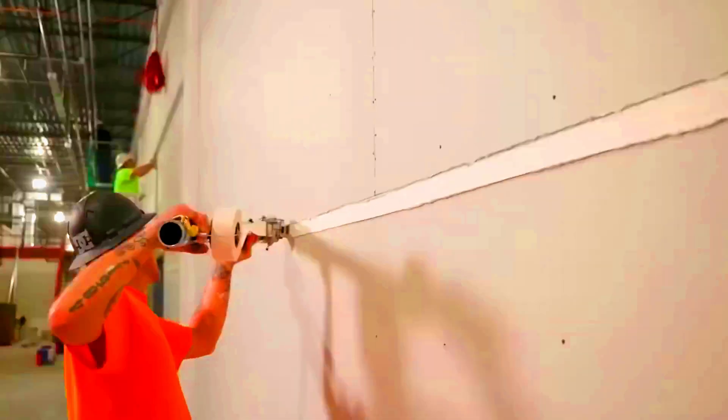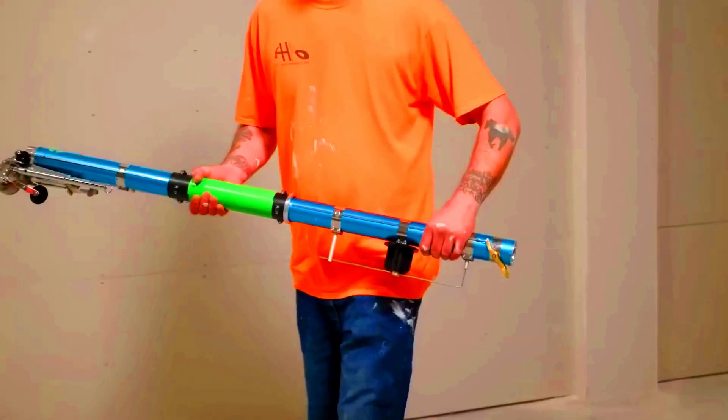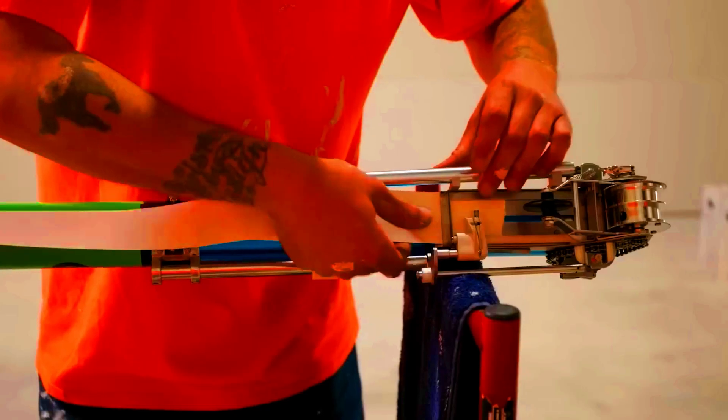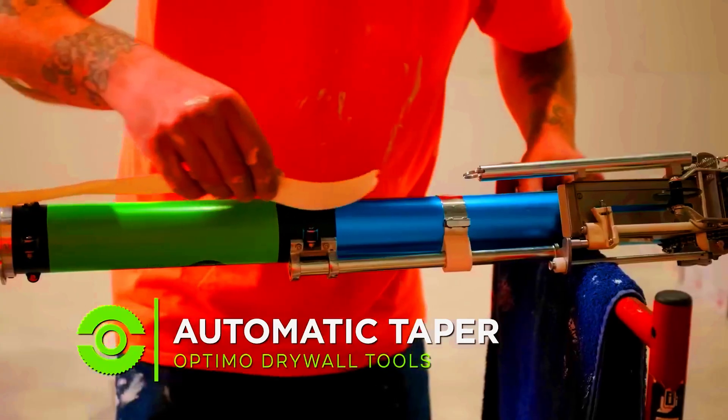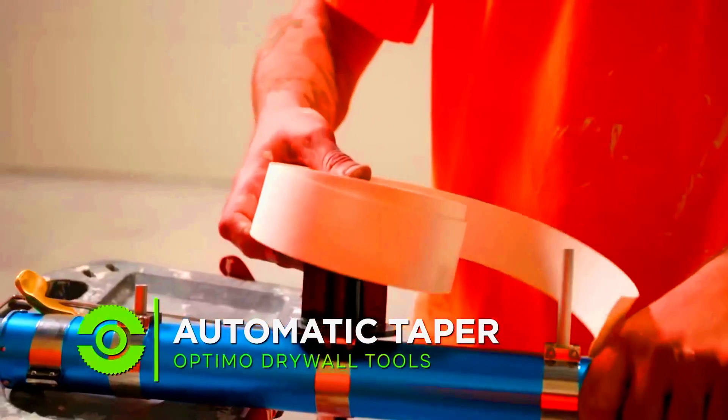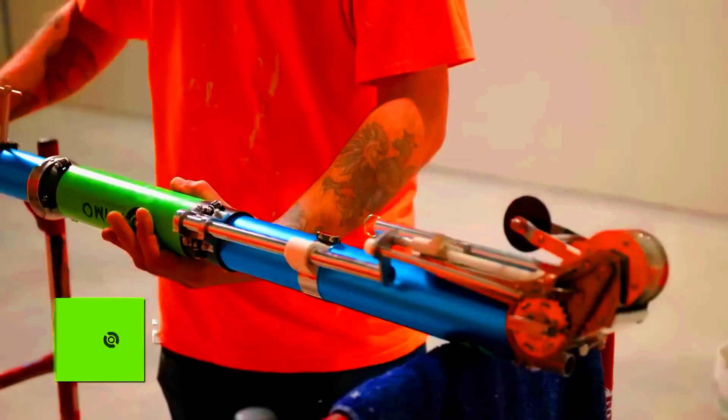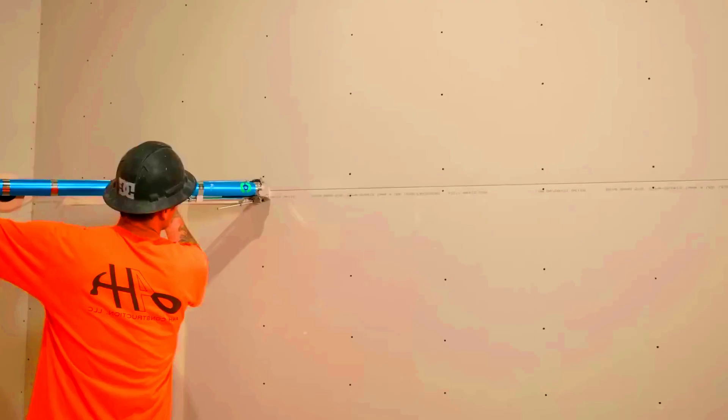The Optimo Automatic Taper is priced at $1,225. Additionally, they offer a manual pump for $375 and a tool for smoothing out seams and distributing the mix more evenly on walls and ceilings for $340.